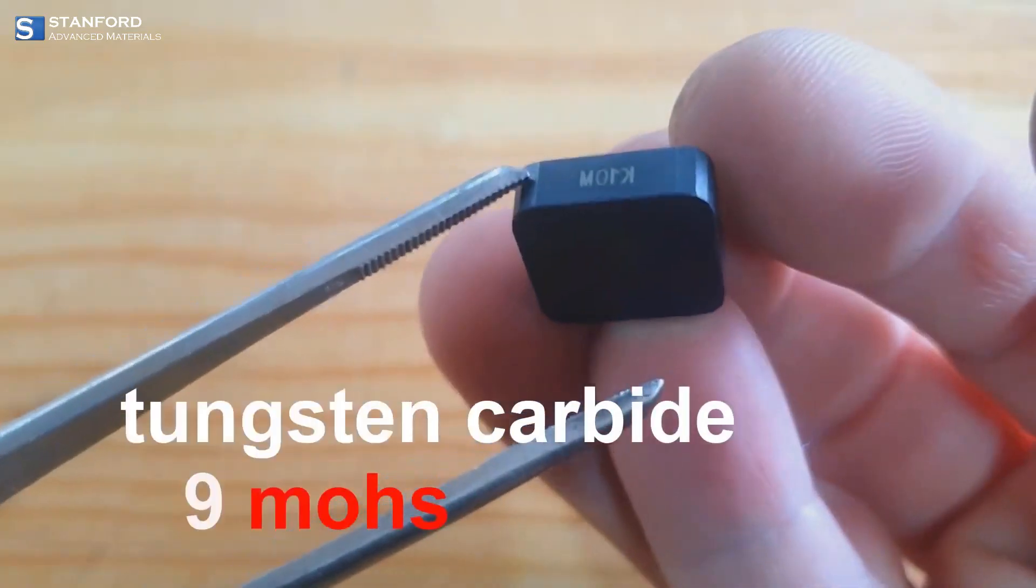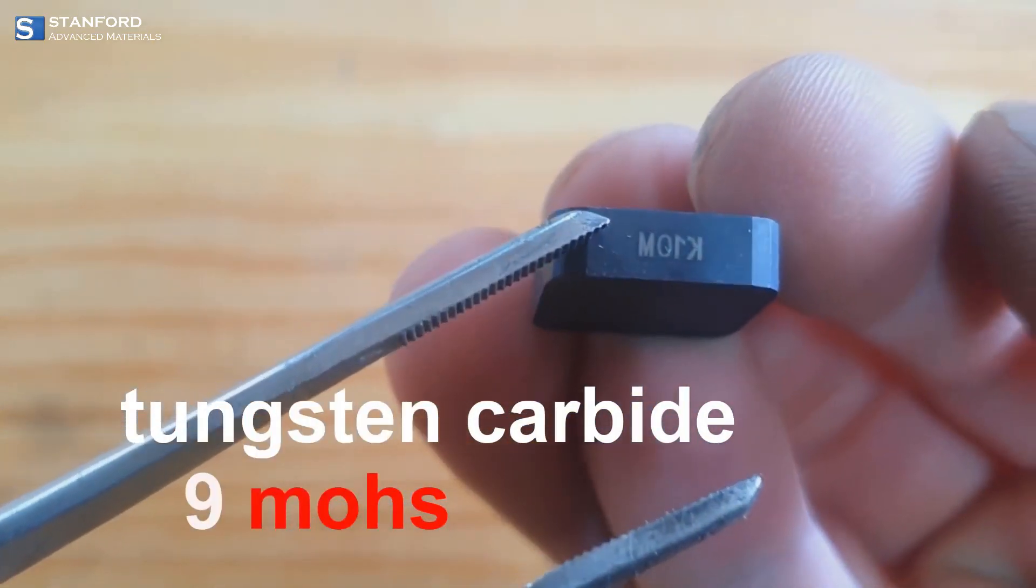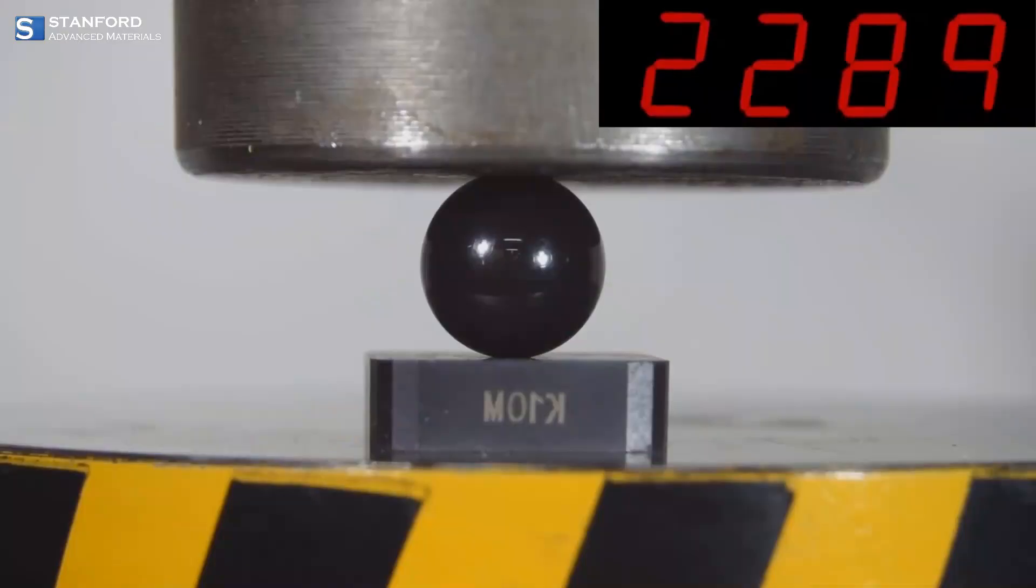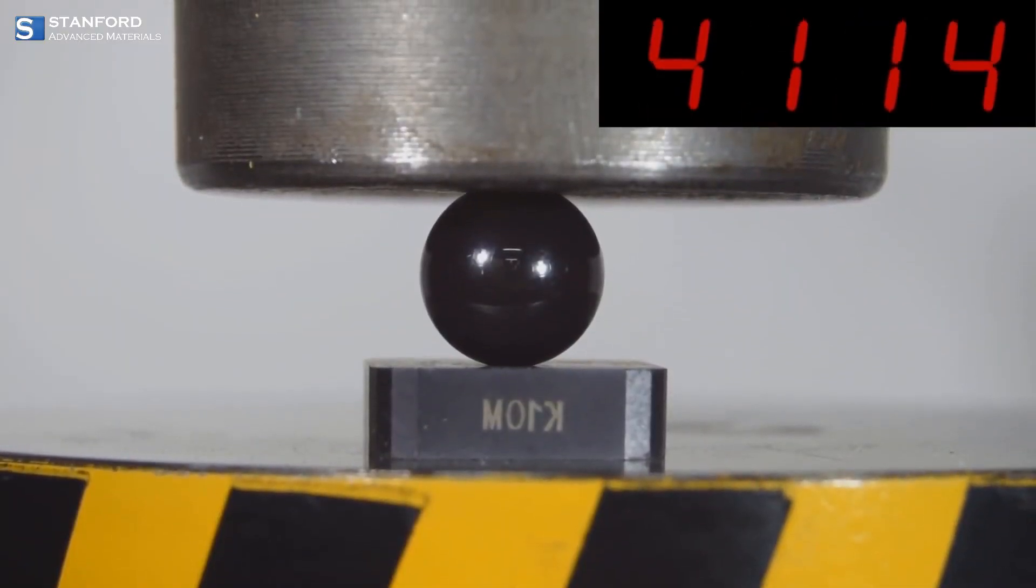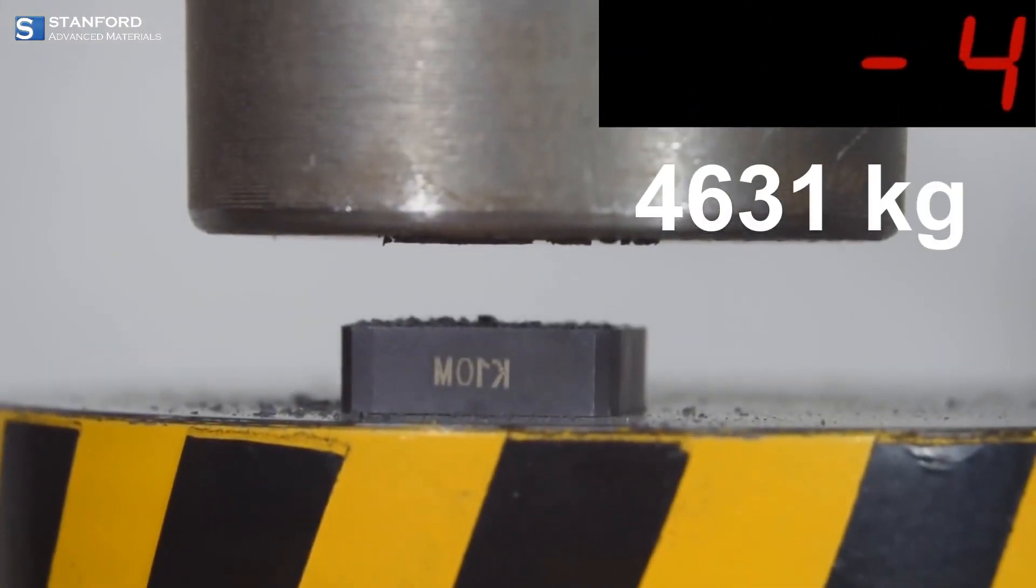With an impressive Mohs hardness of 9, tungsten carbide showcases unparalleled strength, making it a fundamental cornerstone in various industrial applications.